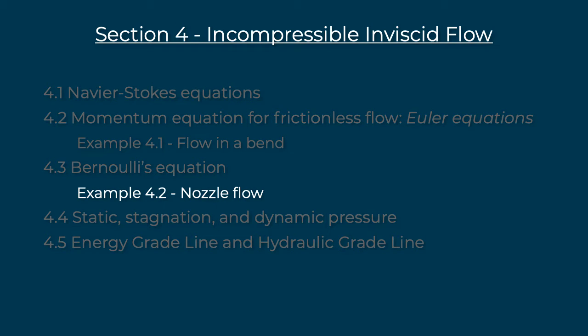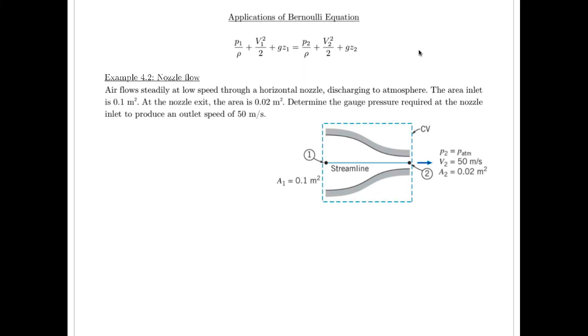Okay, so in this video, I'm going to be solving example 4.2, which is related to video number 11, where we looked at the Bernoulli's equation. So in this example, we're going to look at flow through a nozzle, and specifically, I'm going to look at what pressure would be required to give a certain velocity. So we've got our relevant equation listed at the top here, and the example we're going to do is for a nozzle.